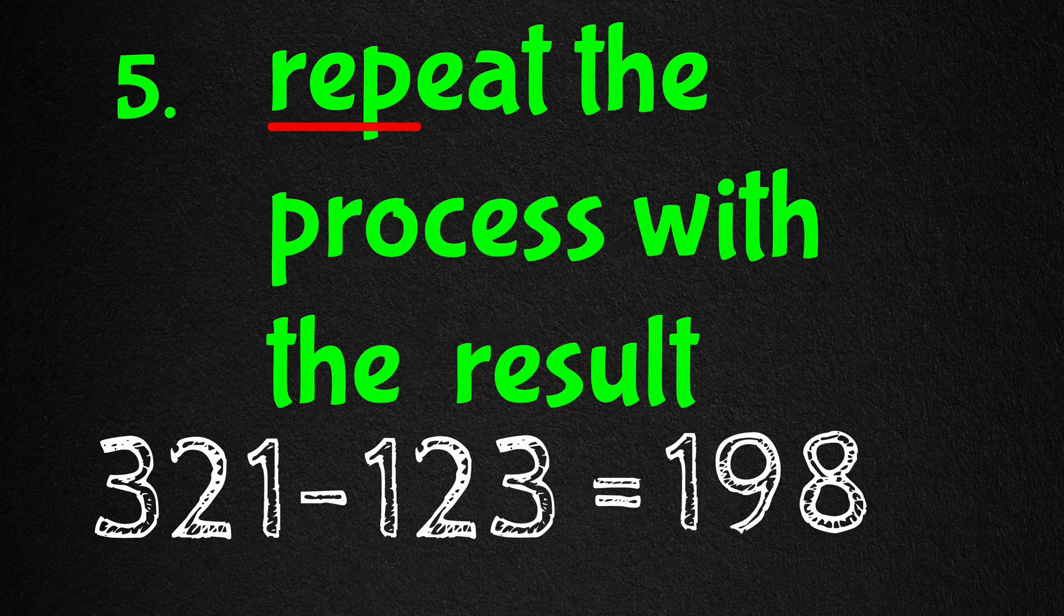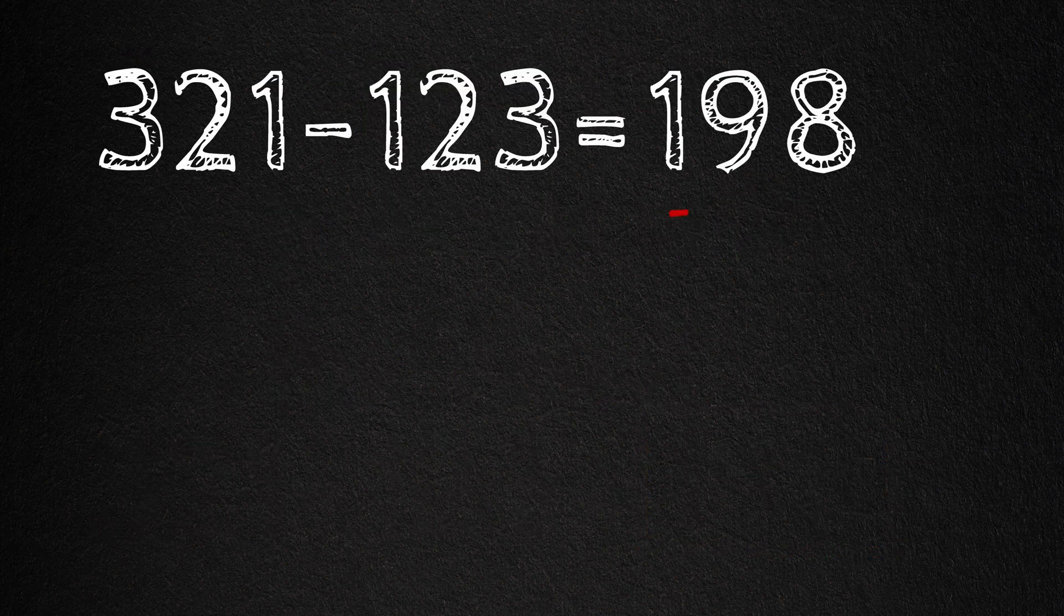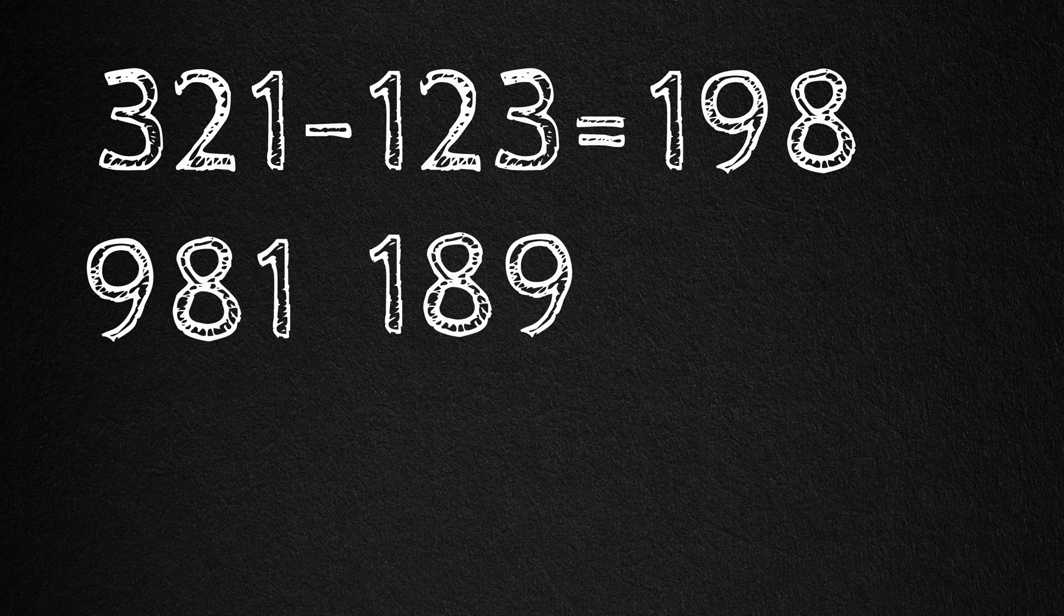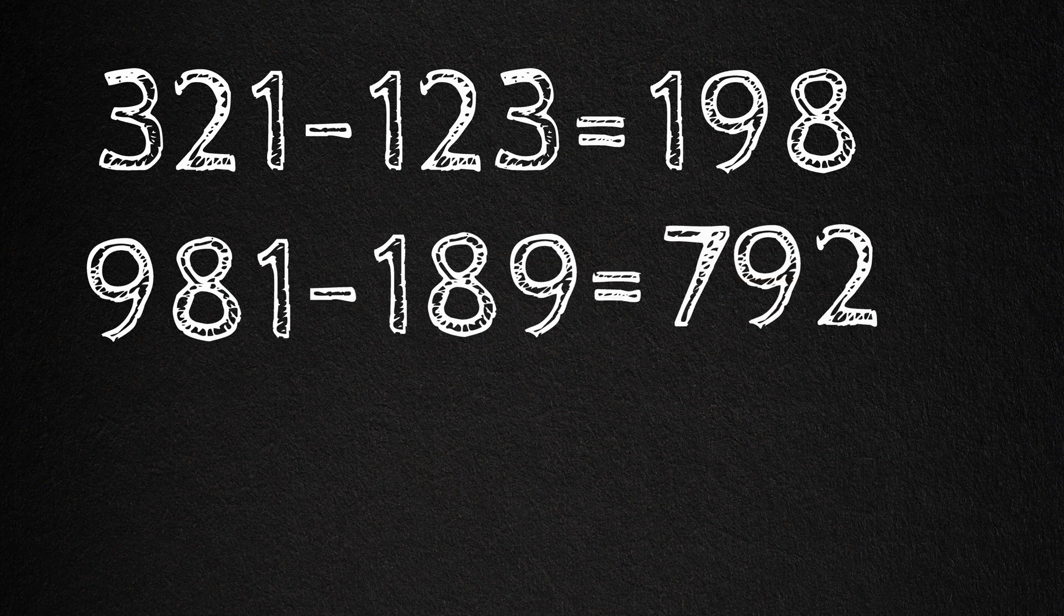The fifth step is to repeat the process with the result. So let's take 198 and repeat the process. Rearranging the digits from largest to smallest, we get 981. And then smallest to largest, we get 189. Subtracting 981 minus 189, we get 792.